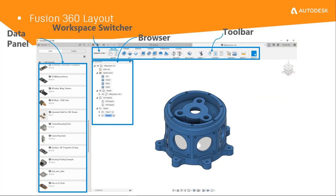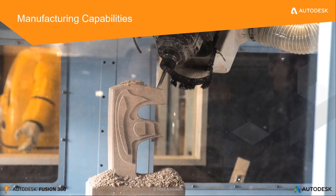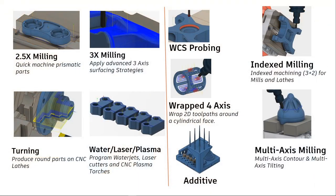The Fusion 360 layout uses the data panel to access your designs and manage projects. Workspaces allow you to switch from one workspace to another. Manufacturing capabilities of Fusion include milling, turning, turn-mill, profile cutting, and additive. In this presentation, milling capabilities will be the focus.